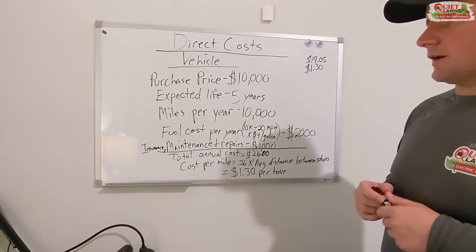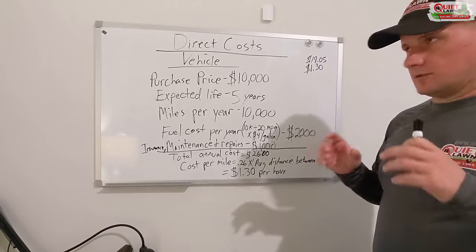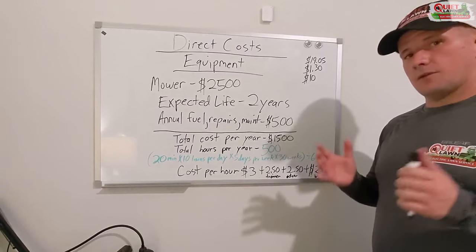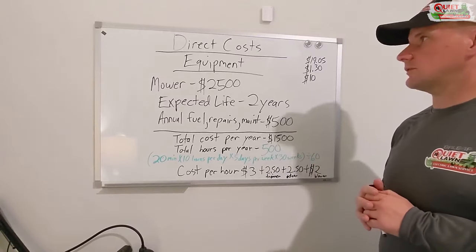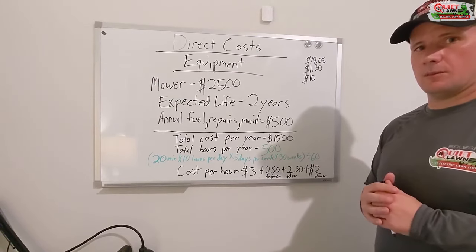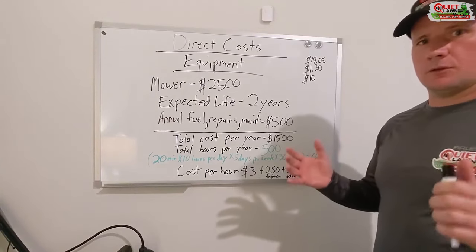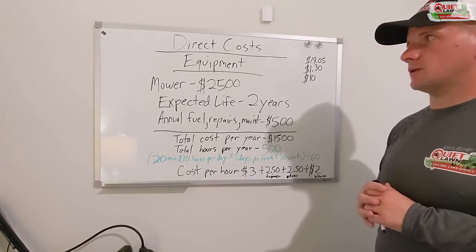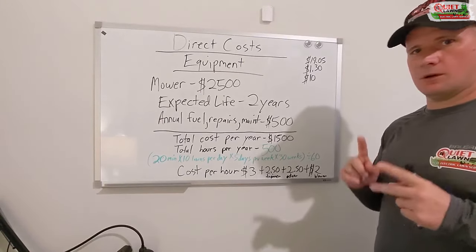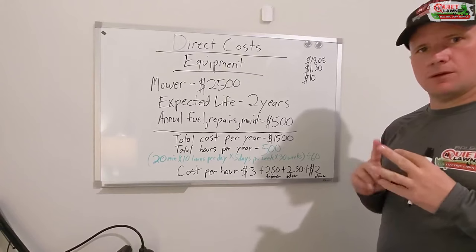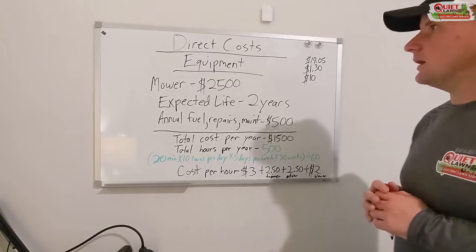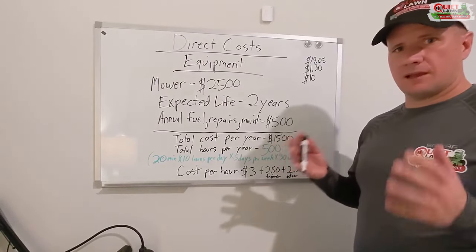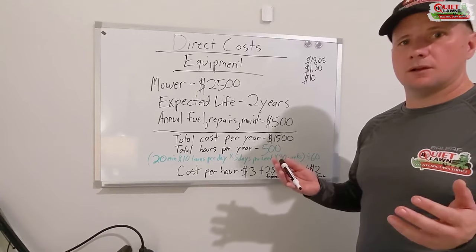Let's do another example with our equipment. So we've calculated the cost of our labor and the cost of our vehicle. Now we need to calculate our equipment cost. We're going to do this for each piece of equipment on that setup. So if it's a mowing crew, you're going to calculate the hourly cost for your mower, each weed eater, each blower, each edger, whatever other tools you might have on that vehicle. I'm going to do the mower — it's the same process for all the other pieces of equipment.